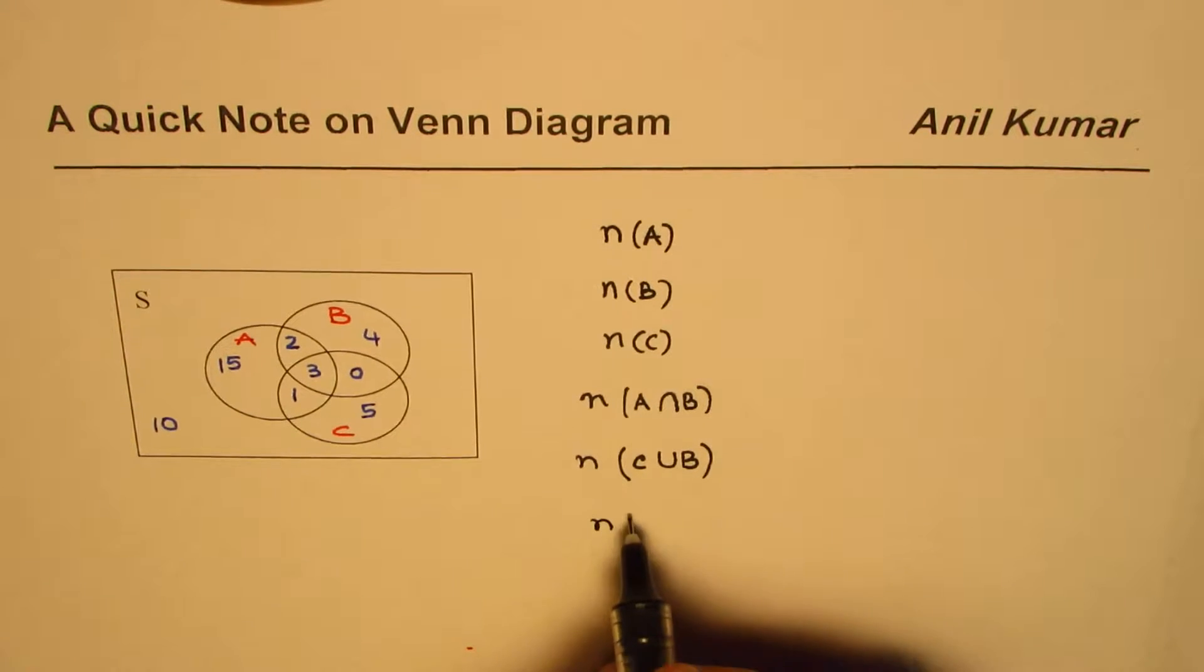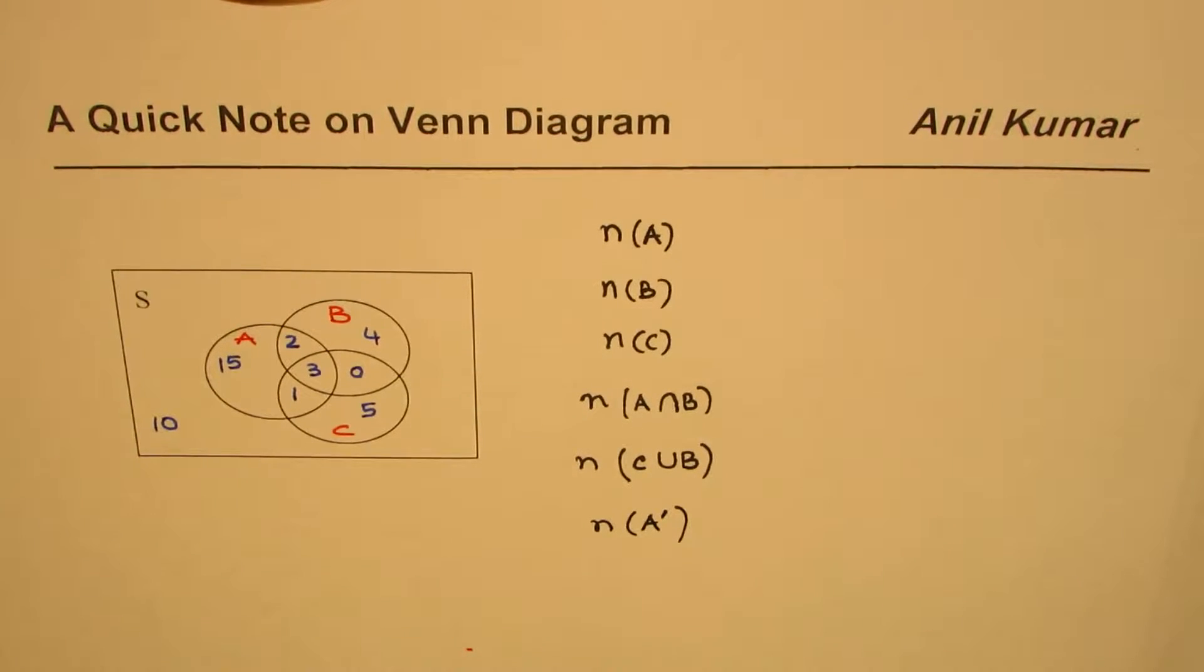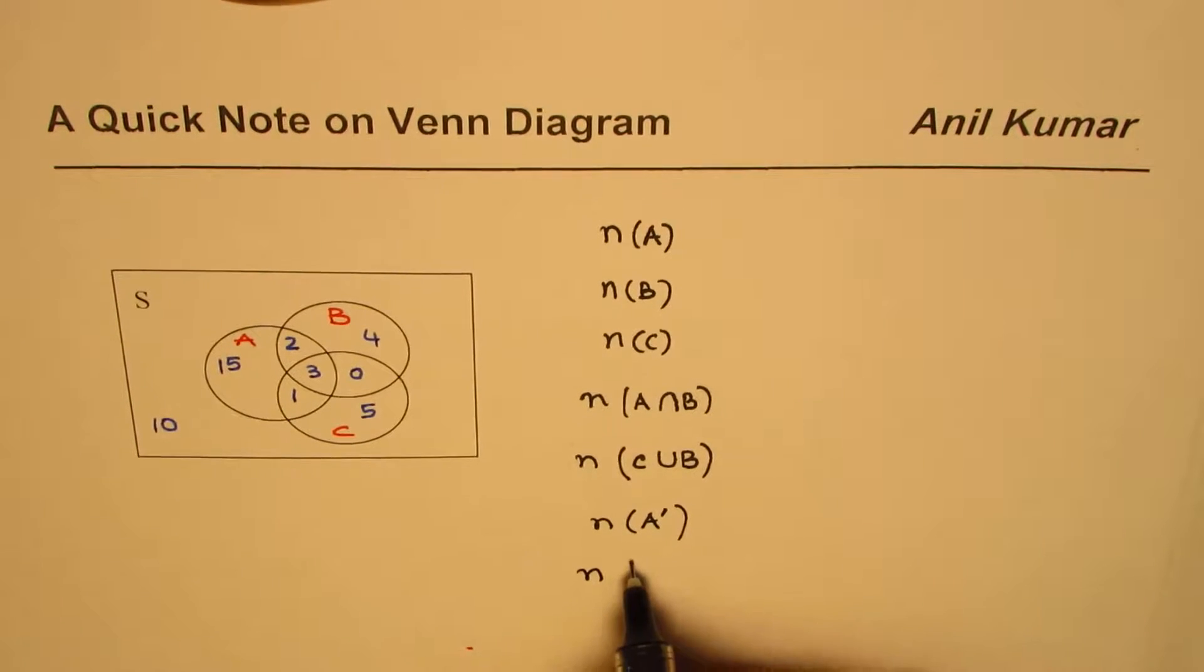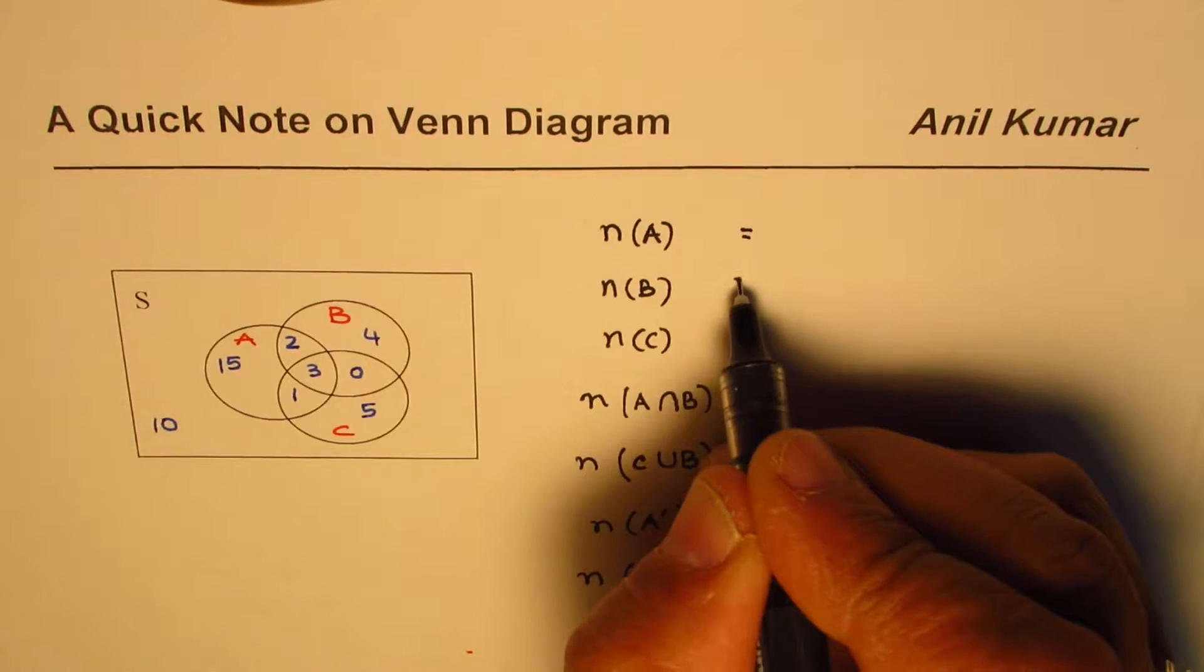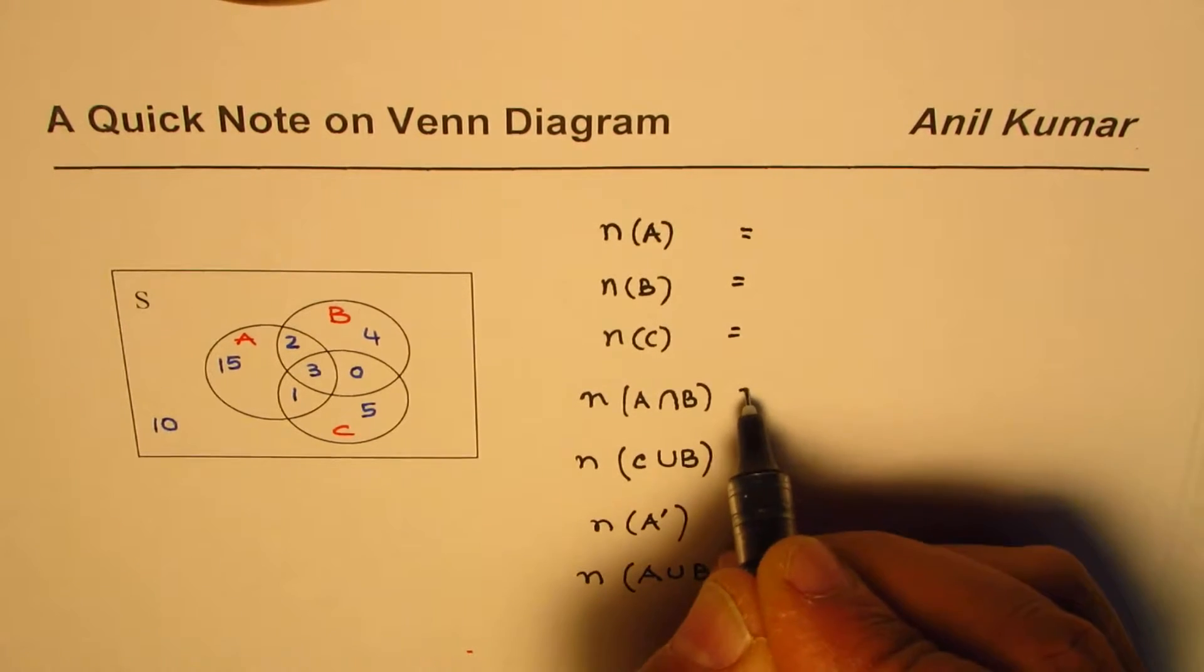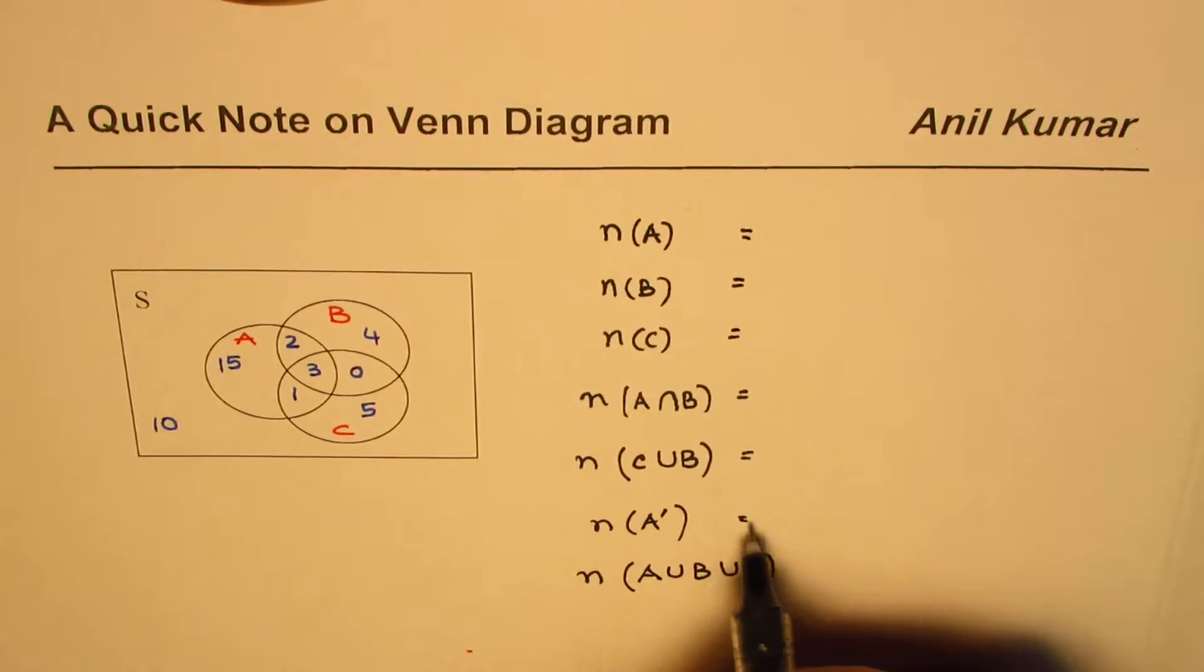Similarly, we could find complements, like the number of elements not in A. You could find the number of elements in A or B or in C. This means 'or', that means intersection, means 'not'. Let this be a question for you. Use the Venn diagram which I have given you on the left side and write down these answers.